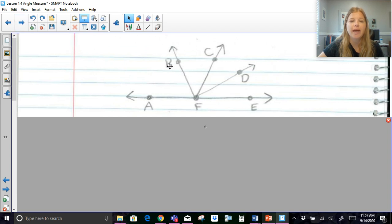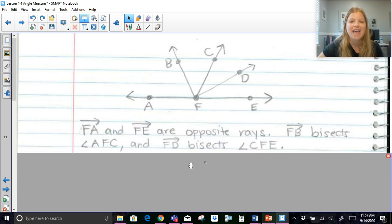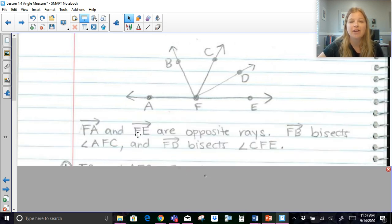Last part of this. So I have this diagram here. Rays FA and ray FE are non-colinear. I'm sorry, they are colinear. So they create a perfect straight line. My apologies. And here it says they're opposite rays. So that's another way to say that. If they are colinear or if they are opposite.